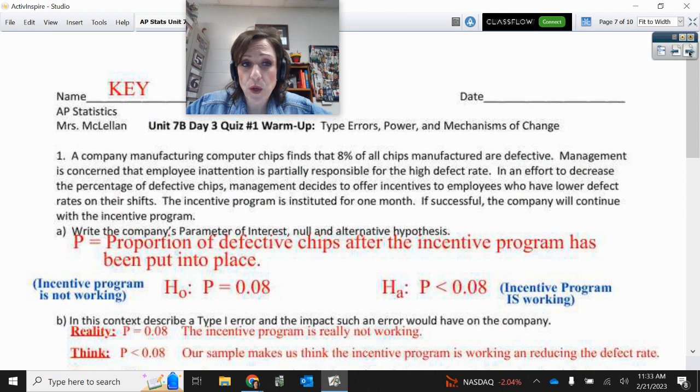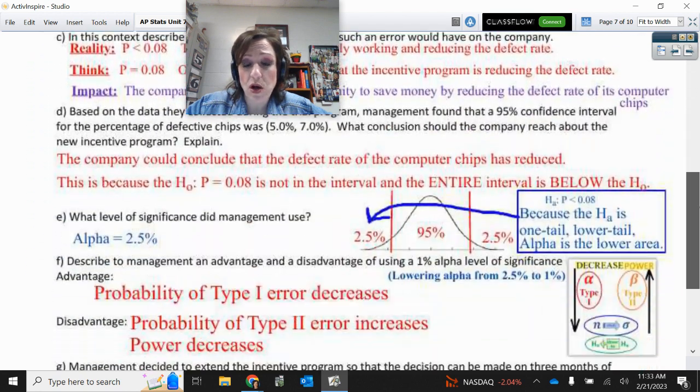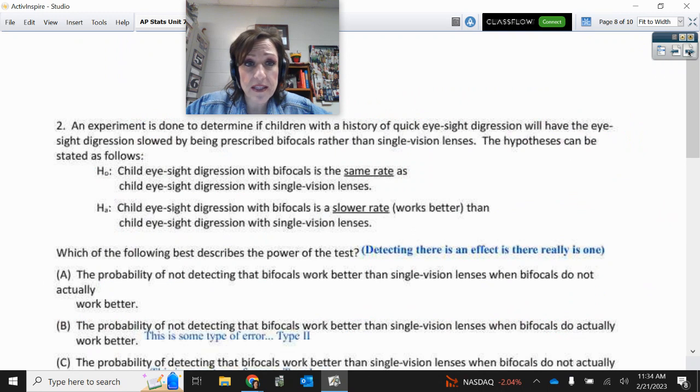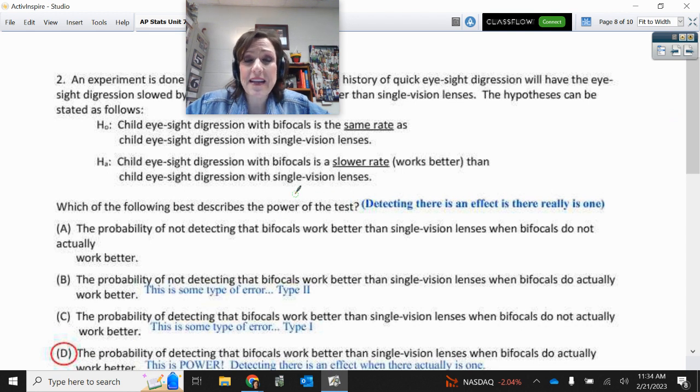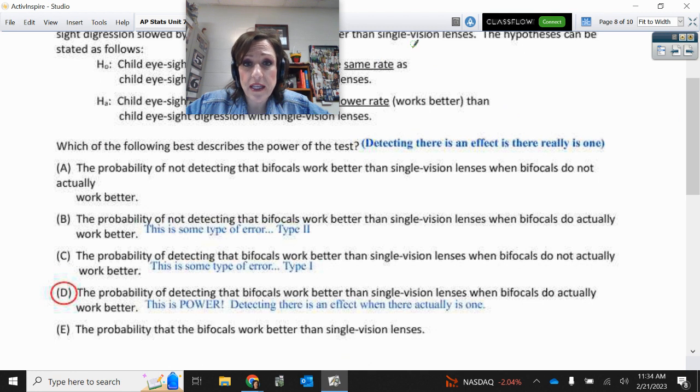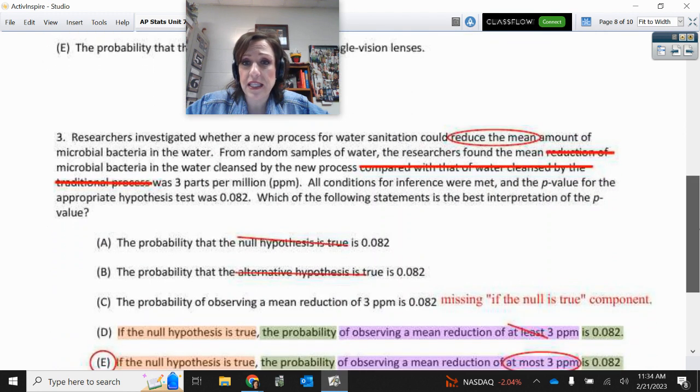Here was the same thing. So this was about the bifocals. Null hypothesis: bifocals were not impactful. Alternative: bifocals were making an impact. So power, detecting an effect if there really is one, detecting the bifocals are effective if they really are effective. Cut to the nitty-gritty of it: detect an effect if there really is one. So that's what it says here: detecting the bifocals work better when they actually do, detecting an effect if there really is one.